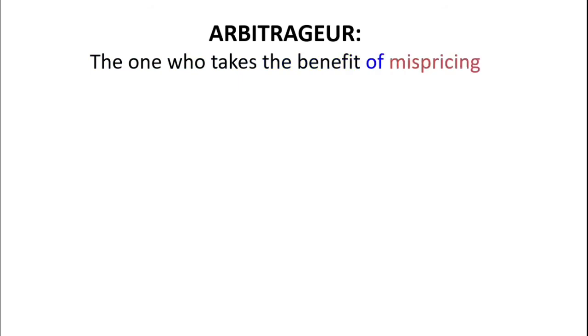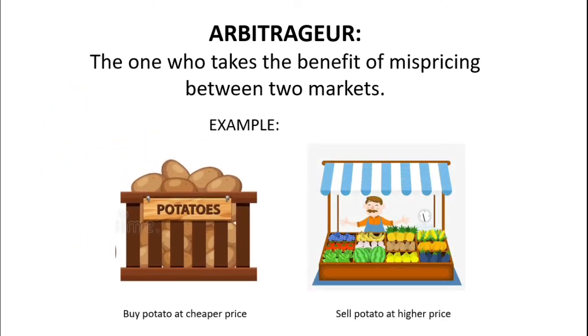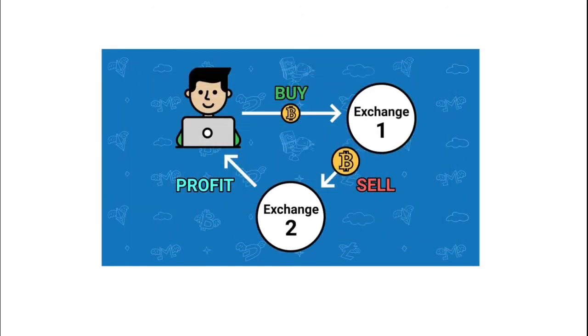Now let's talk about arbitrageurs. An arbitrageur refers to a person who takes the benefit of mispricing between two markets. For example, consider two vegetable markets where in one, potatoes are sold for 20 rupees, and in the other for 30 rupees. Anyone can take the benefit of this mispricing by buying the cheap potatoes from the cheaper market and selling them at a higher price in the other market.